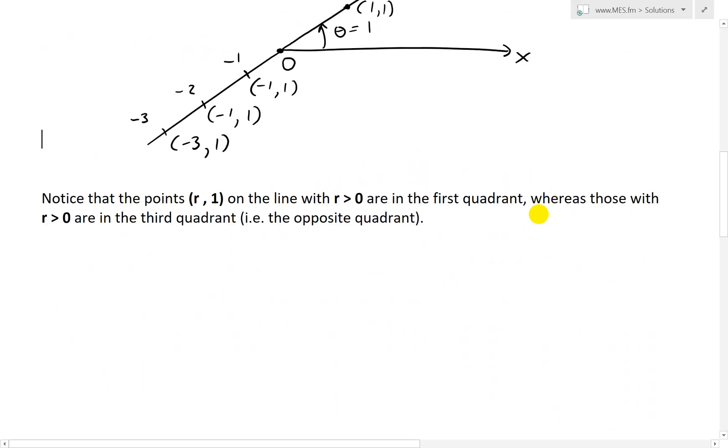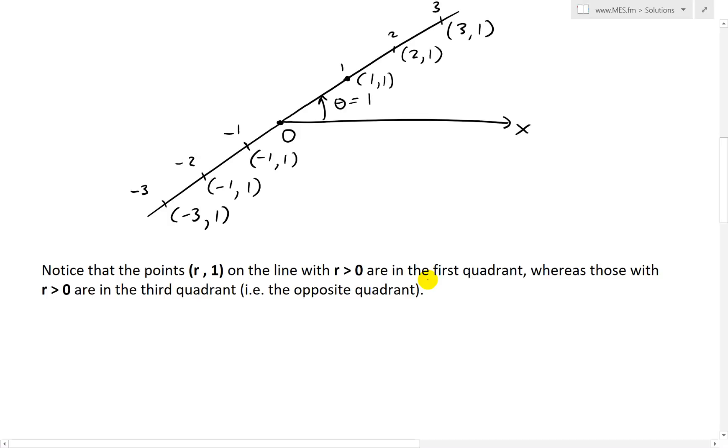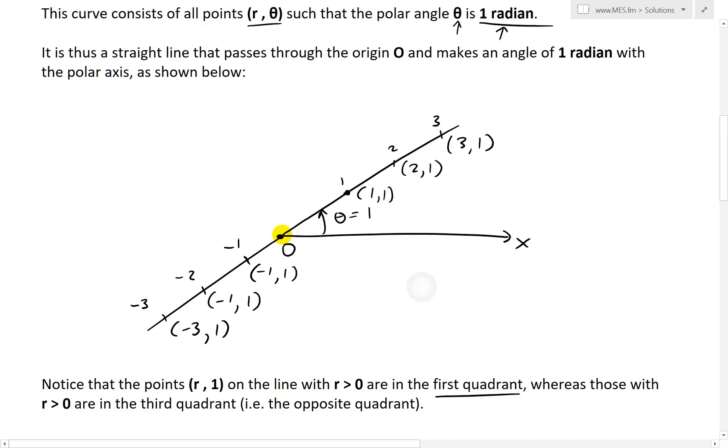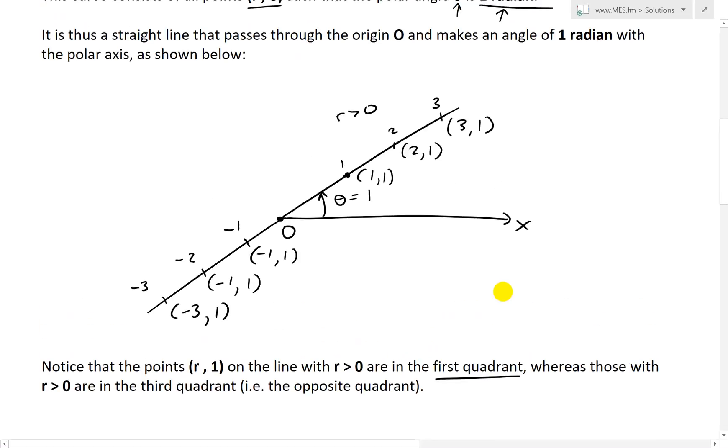So notice that the points (r, 1) on the line with r is greater than 0, just another note, are in the first quadrant. So in this case, we have r is greater than 0. Then what we have is this line,